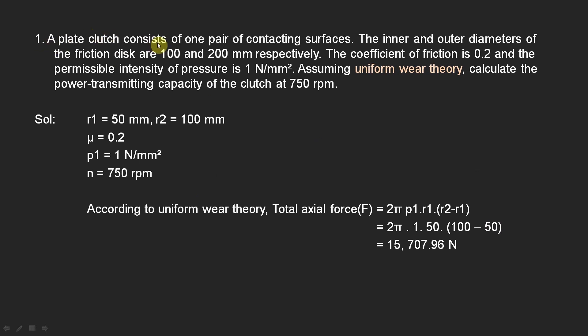First problem: a plate clutch consists of one pair of contacting surfaces. The inner and outer diameters of the friction disc are 100 and 200 mm respectively. The coefficient of friction is 0.2 and the permissible intensity of pressure is 1 Newton per millimeter square.